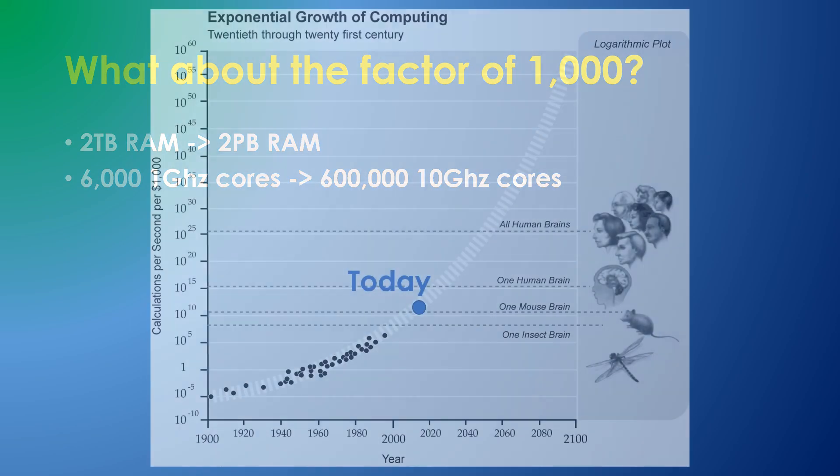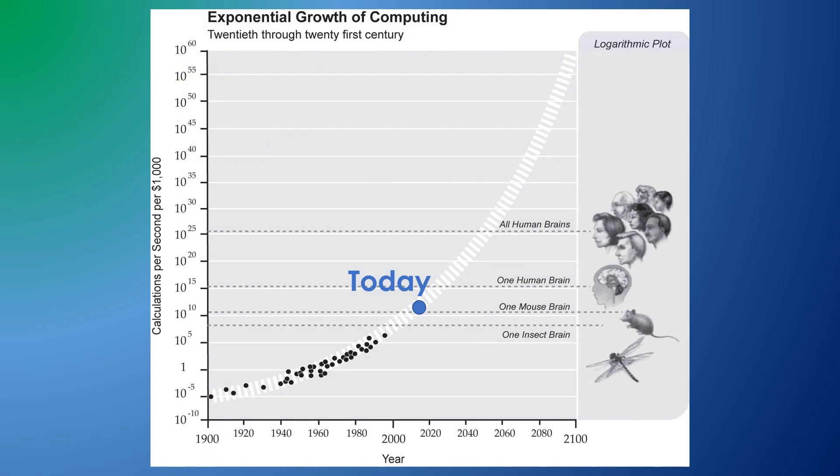Moore's Law is still alive and well for both RAM and GPU cycles. Based on the current trend, such a maximum machine will cost $50,000 only 15 years from now.